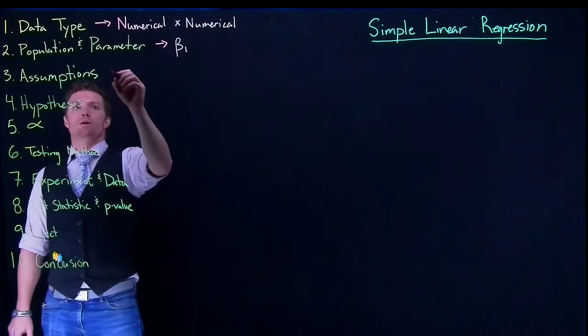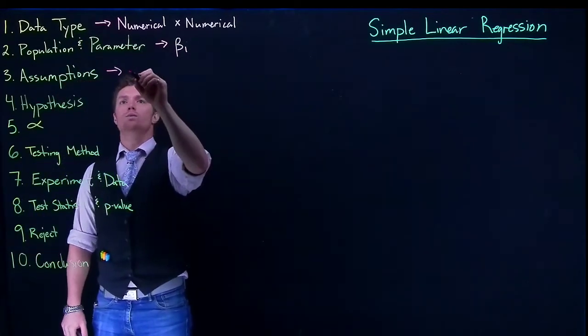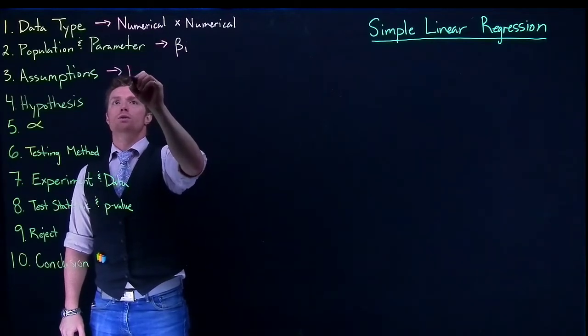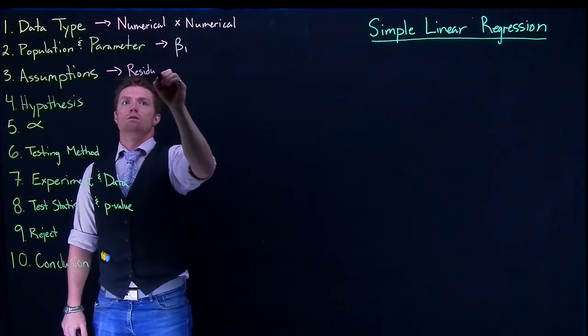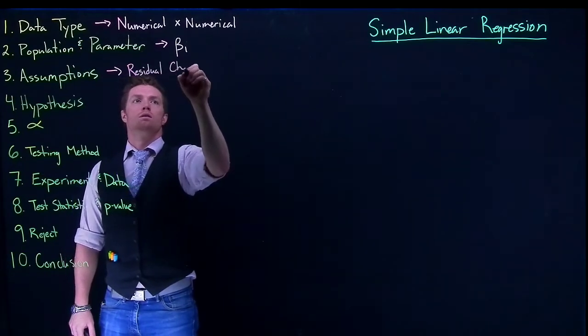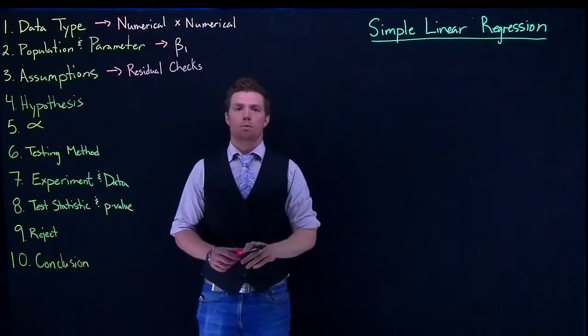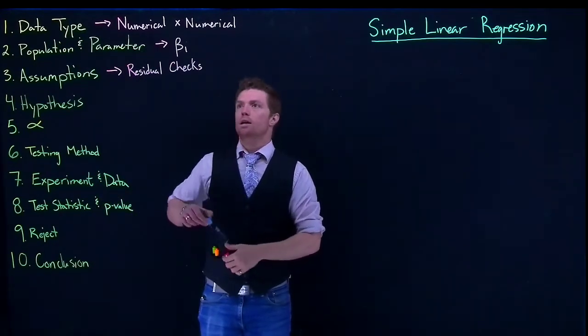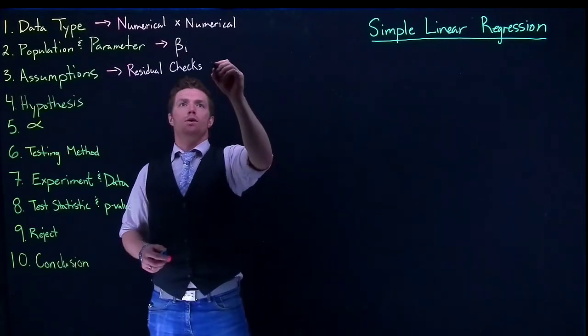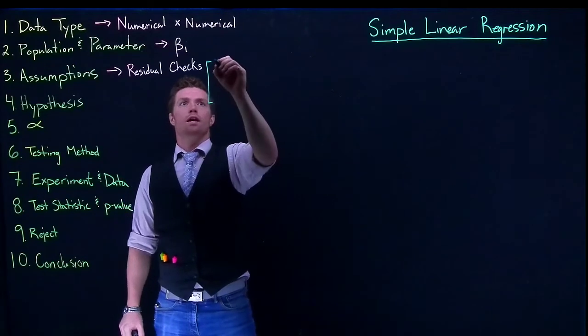The assumptions that we go through are all the assumptions that deal with our residual plots. So when we do these residual checks, remember there were five specific parts that we were doing.